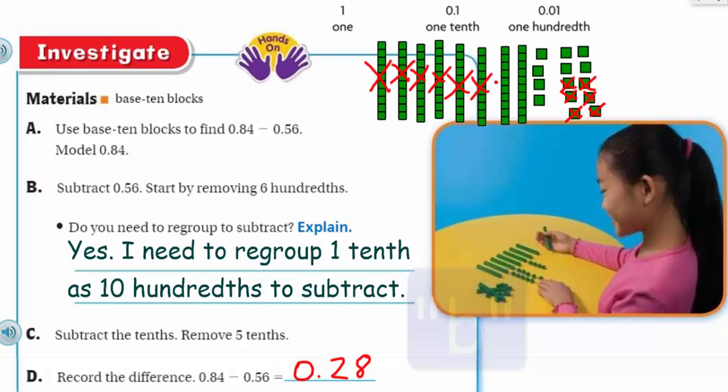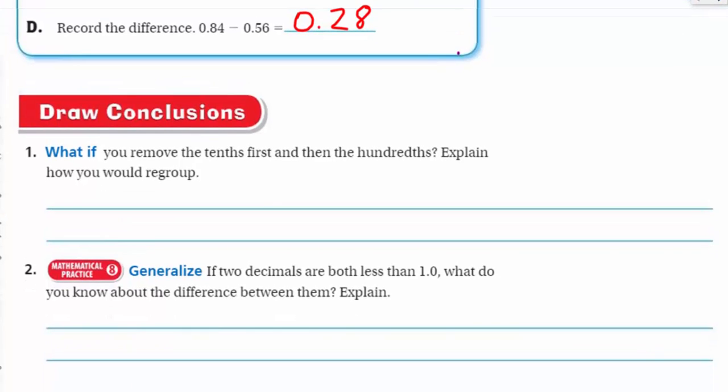I think it's time to move on. Let's go on to draw conclusions. What if you remove the tenths first and then the hundredths? Explain how you would regroup. Well, I'd still have to regroup by exchanging my 1 tenth for the 10 hundredths. There's just no way around it. Whether you start at tenths or you start at hundredths, it doesn't matter. You're going to have to regroup. That's what it's about.